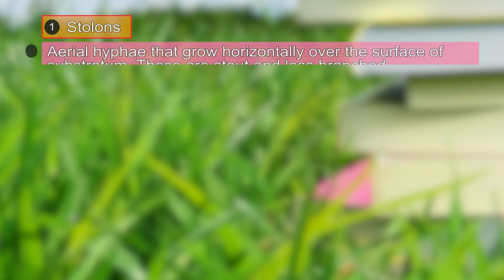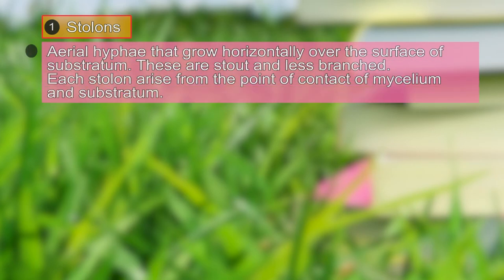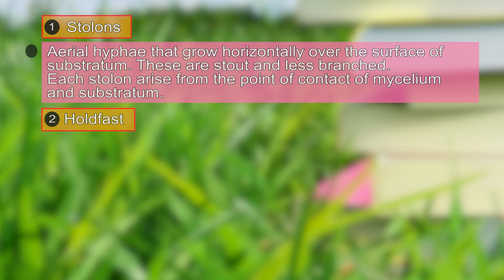The first type is stolons, also called aerial hyphae because they are always above the substratum. They grow horizontally over the surface of the substratum and are stout and less branched. Each stolon hypha arises from the point of contact of the mycelium and the substratum.